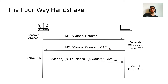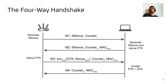After the client receives message three, it will accept this candidate pairwise transient key as the in-use pairwise transient key, and it will also accept the group key it just received from message three. It will confirm this towards the access point by sending message four, which consists of a copy of the replay counter it saw in message three and another MAC. After the access point sees message four, it will also successfully finish this four-way handshake and accept the pairwise transient key they derived.